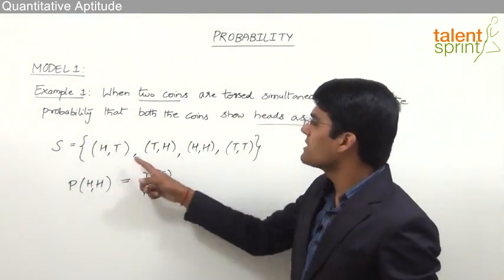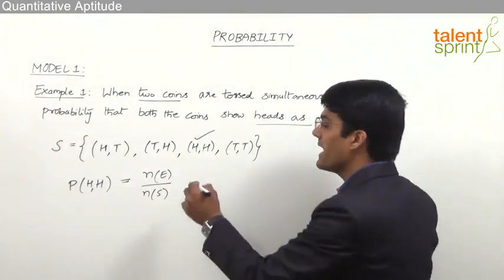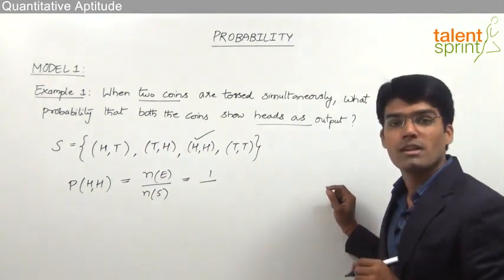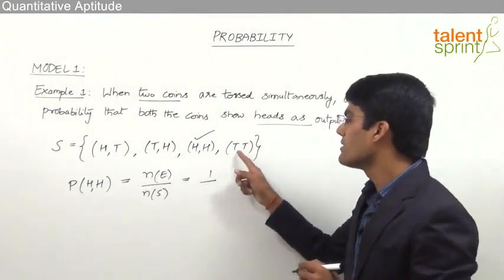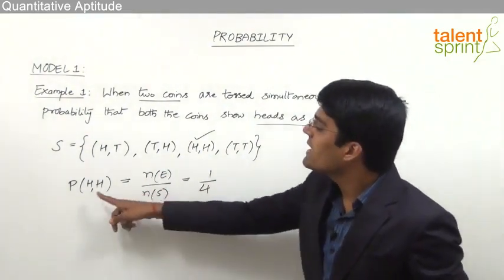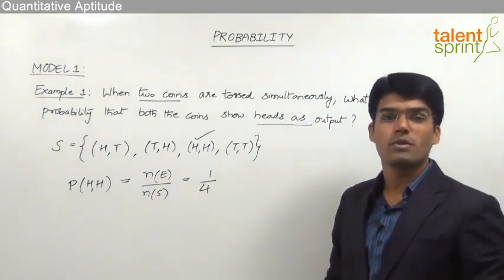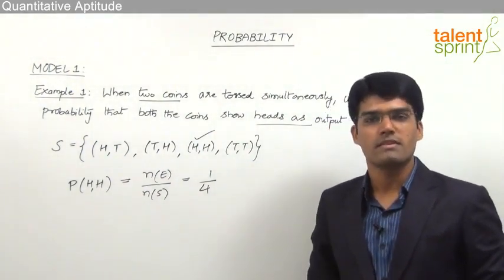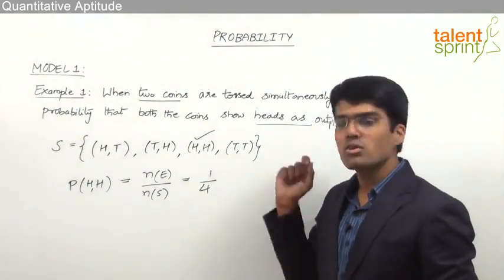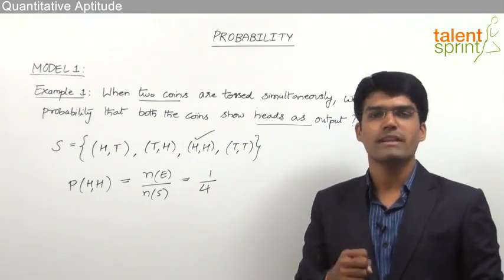From the sample space, the number of outcomes which show both heads is only one. So the number of favorable outcomes is one, and the total number of outcomes is four. Therefore, the probability that both coins show heads is equal to 1/4. We first need to decide the sample space, then take the favorable outcomes divided by total outcomes to get the required probability.